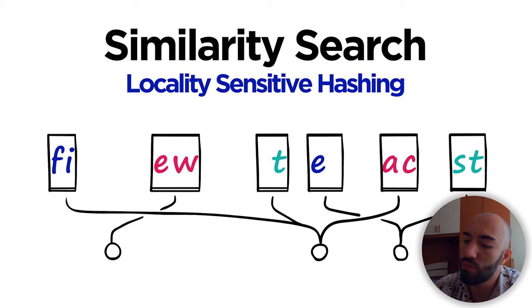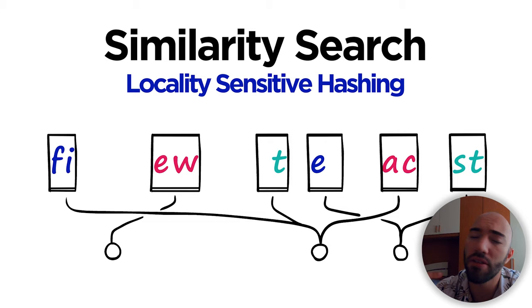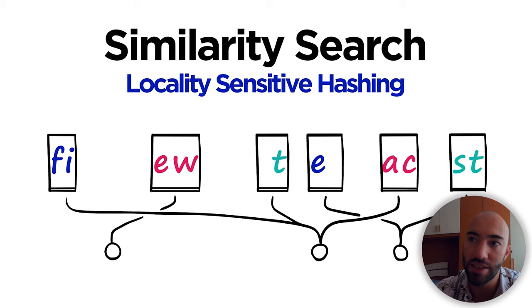You have two approaches. You have exhaustive, which is comparing all of the data points — comparing all these vectors — and obviously it's slow. Approximate search allows us to approximate those vectors, restrict our scope to a more relevant range of vectors and so on. It covers a lot of different techniques; it's not just one technique here.